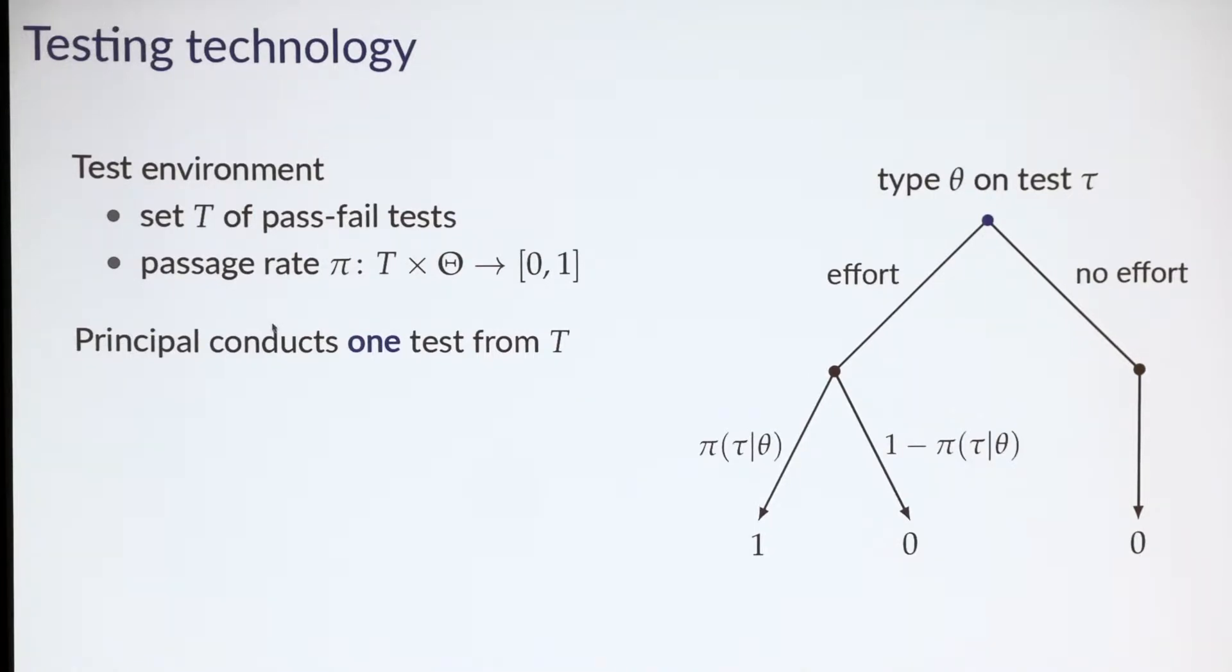A testing technology is specified by two objects: a set T of pass-fail tests, and a passage rate pi which specifies the probability that each type can pass each test. The principal can conduct one test from this set. Let me walk through the procedure. An agent who is type theta given test tau makes a binary effort choice—exerting effort on the test or not. Effort is costless here; it's just a choice whether to try on the test or not. If the agent doesn't exert effort, he fails with certainty. If the agent does exert effort, his passage probability is pi of tau given theta. The principal sees the test result but not the agent's effort.